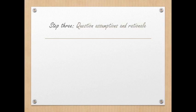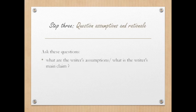Step three: Question assumptions and rationale. Ask these questions: What are the writer's assumptions? What is the writer's main claim? What rationale or justifications did they use? What are the main arguments found in the text?